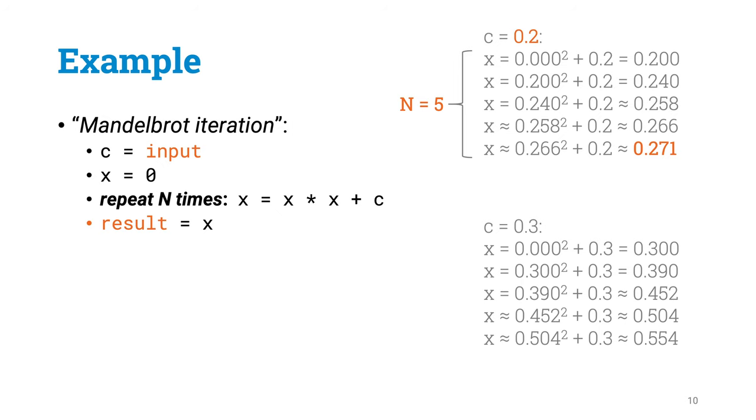Let's start with a toy example. We want to simulate the following iterative process. We start with some input value C, we initialize x to 0, and then we repeatedly calculate what is x squared plus C. And this is the new value of x. We repeat this for n times, and see what is the final value of x.